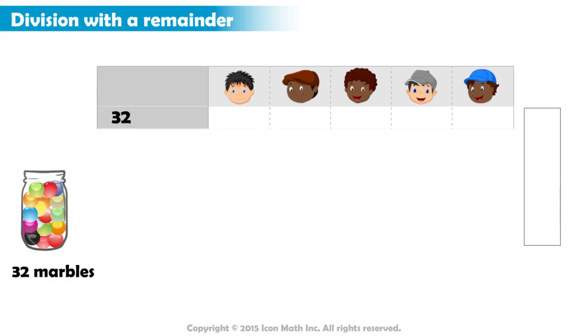We begin by taking away five marbles and giving each player one marble. This leaves us with 27 marbles. And we write one in the marginal column to the right.